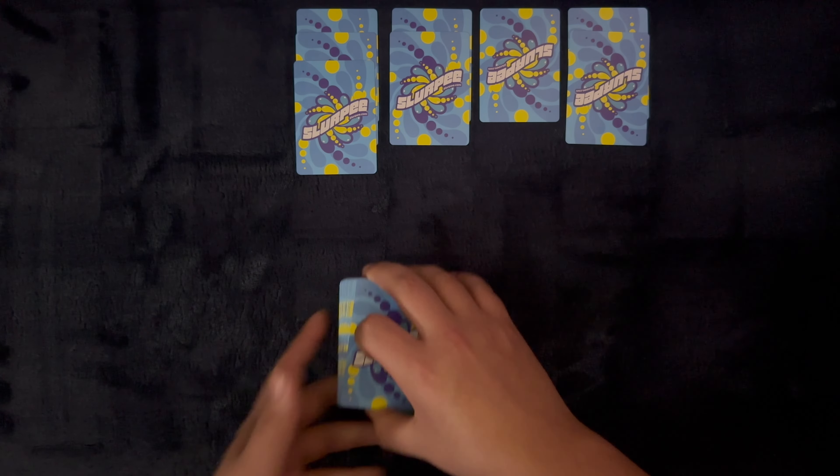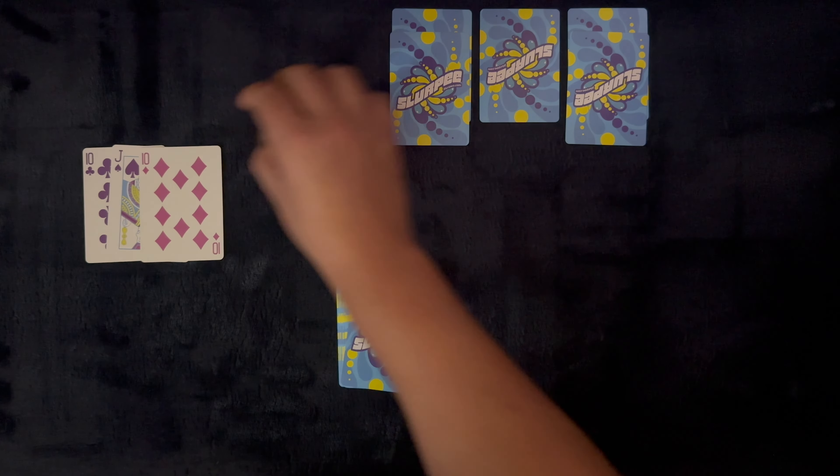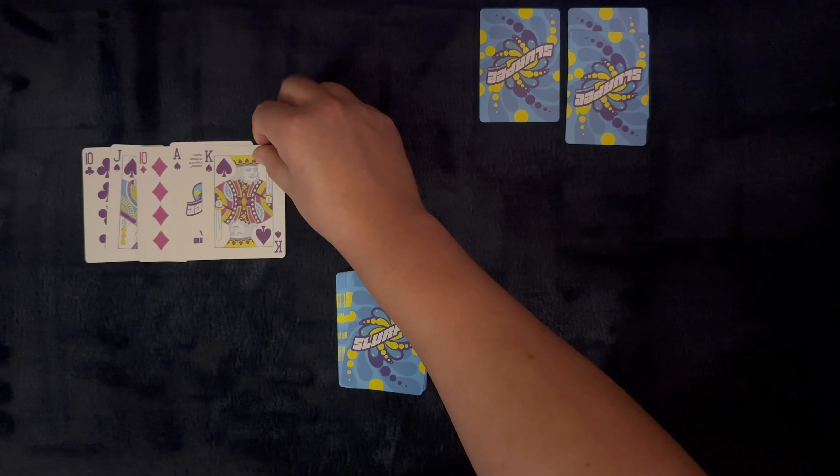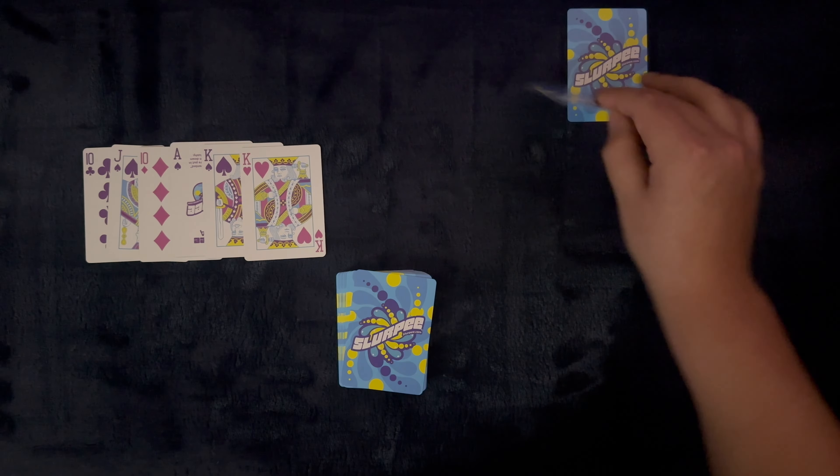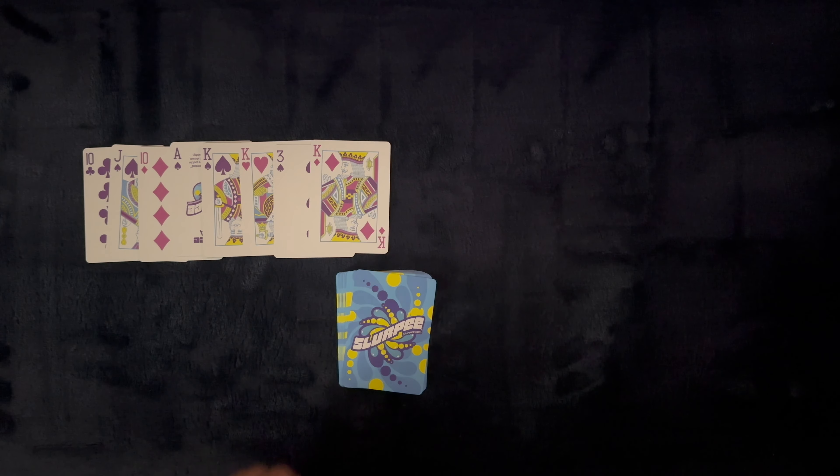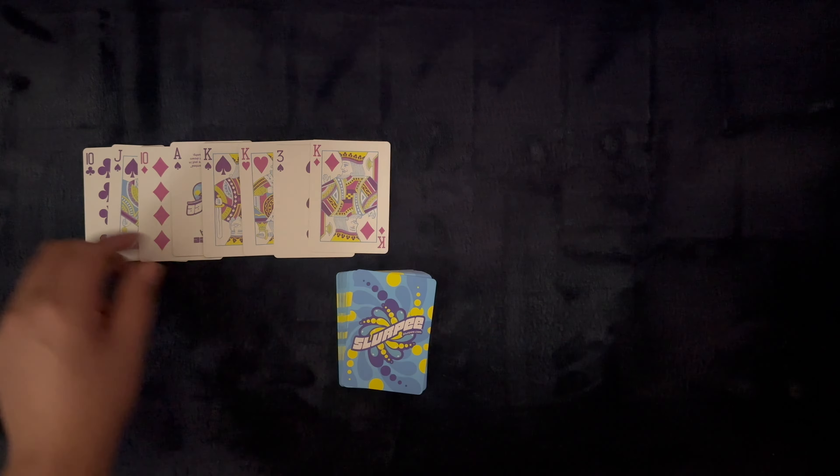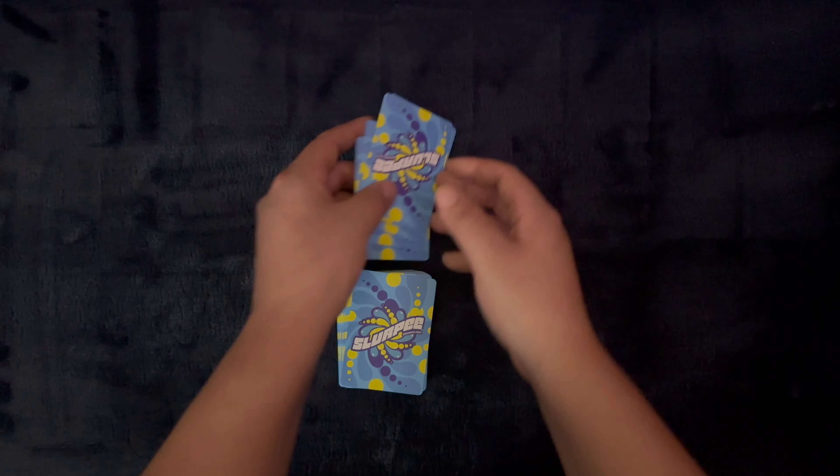And you know what? I'm wanting a Pina Colada Slurpee drizzled with a little bit of blue raspberry and a splash of Pina Colada. Triple Kings, Double Tens. My goodness. That makes sense.